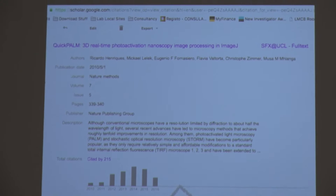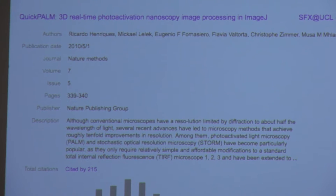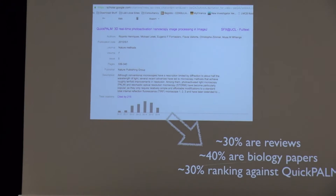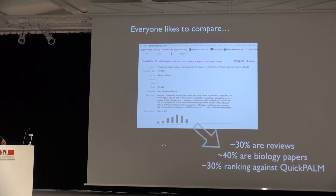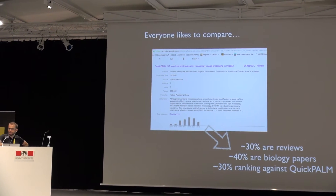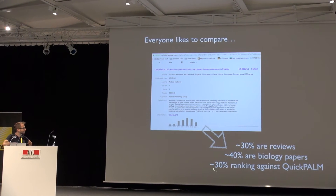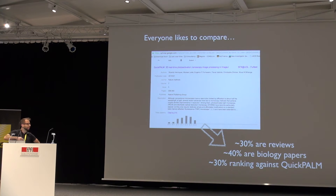Once we started getting citations on QuickPal, it was quite interesting, because I started looking at who was citing it. About 30% of citations are reviews, 40% is biological papers, and the interesting part is 30% is other algorithms that are benchmarking against QuickPal. The first paper that ranked against QuickPal — I thought, now someone has something better, no one is going to cite me anymore. But they kept on citing, and everyone kept on comparing against QuickPal. This highlights that these challenges are quite interesting because they make a fair comparison between algorithms, and it's actually nice to have a third party doing those tests, because many authors can be unfair on these comparisons.